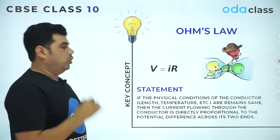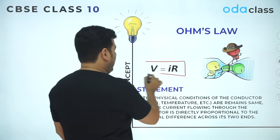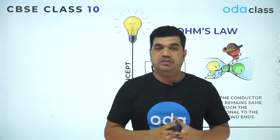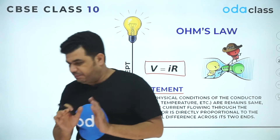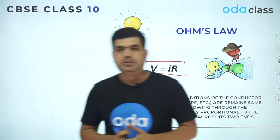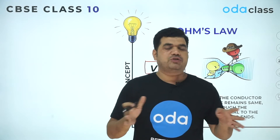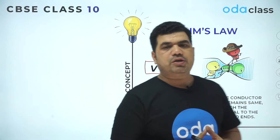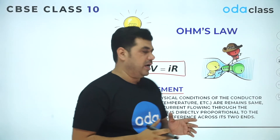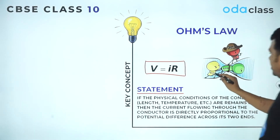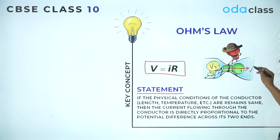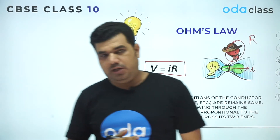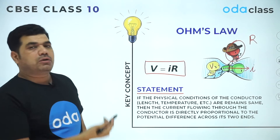Next is Ohm's Law. The statement: according to Ohm's Law, if the chemical and physical properties of a conductor remain constant, then the potential difference across two points of a conductor is directly proportional to the current. Removing the proportionality sign gives V = IR, where R is the resistance. Voltage V pushes the current I, while resistance opposes its flow. Let's apply this formula in the question.